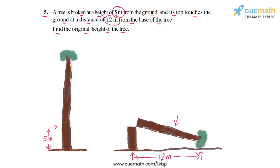Using this information, we have to find the original height of the tree. The part that is still standing is 5 meters, and this distance is 12 meters from the base of the tree to the top. We need to find the length of the remaining part of the tree so that we can add that to 5 meters, which will give us the total original height. If you observe the second sketch, you can see that a right triangle is being formed.